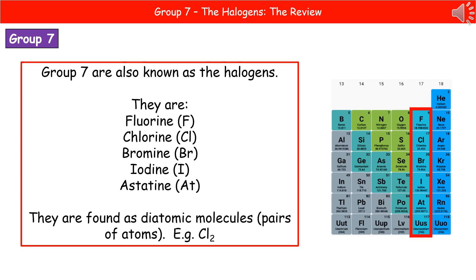A key point to remember when using halogens in any symbol equation is that they go around as a diatomic molecule - the atoms go around as a pair joined together. So when writing the symbol for any halogen, you must write the chemical formula - F, Cl, Br, I, At - and put a subscript 2 on the right-hand side, because there are two atoms joined together.